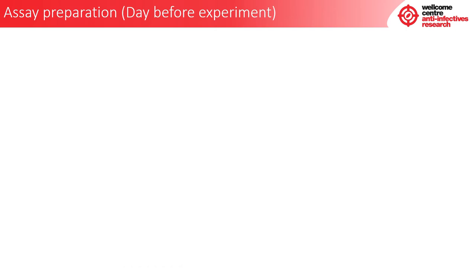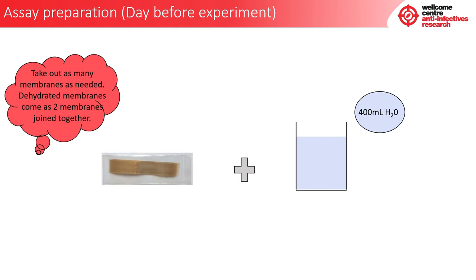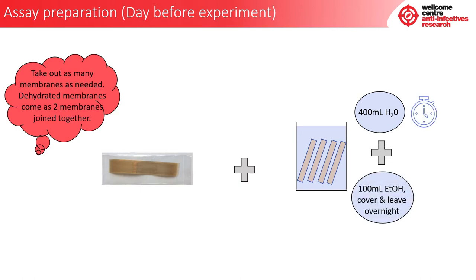As mentioned previously, dehydrated membranes need to be hydrated prior to use. This is recommended to be done the day before your experiment. For this, you will need your membranes and a beaker. Fill the beaker with 400 ml of deionised water, then take out as many membranes as needed. Dehydrated membranes come as two membranes joined together; therefore, for a whole 96-well dialysis block, you will need eight membranes in total, so take out four of the joined-together membranes. Put these in your water and leave on the bench for an hour. After this hour, add 100 ml of ethanol, cover the beaker, and leave overnight in the fridge.